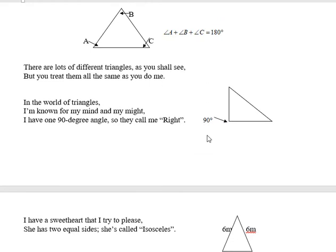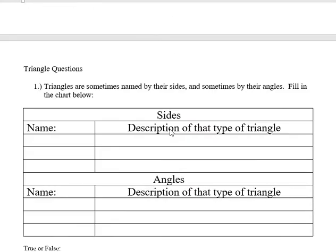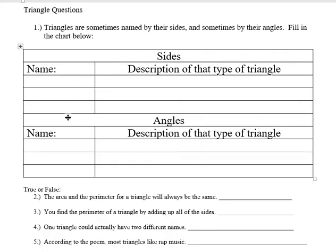He's known for one 90-degree angle. It didn't say anything about his sides. So known by his angle, 90 degrees, that's a right triangle. So by his angles, I should go down here, I'm going to type right, and he has a 90-degree angle.